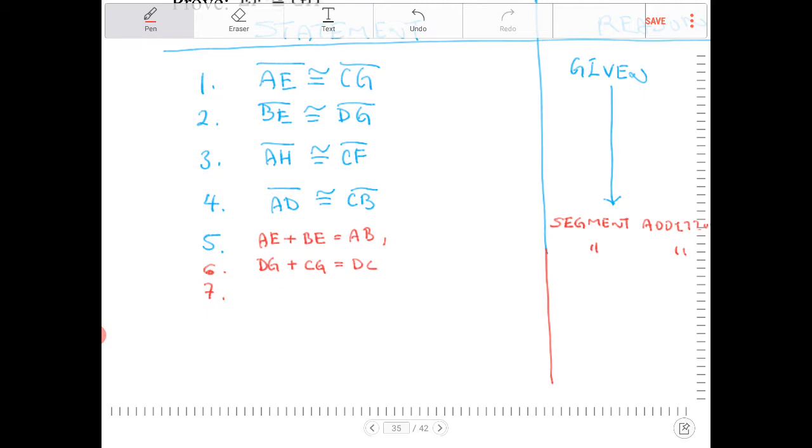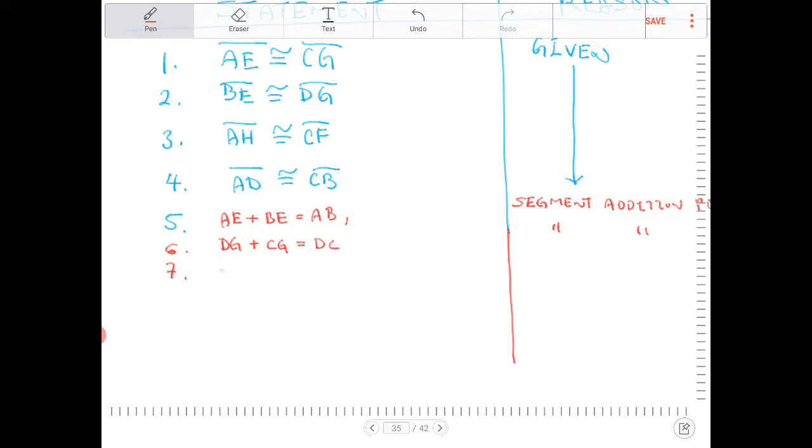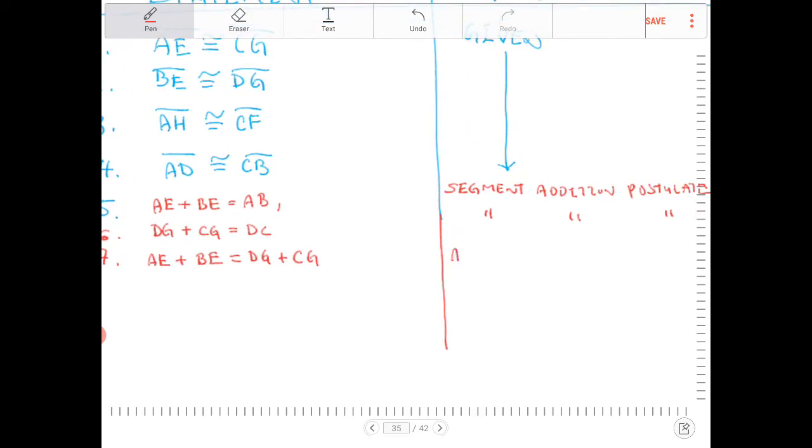So what I'm going to do next is, I'm going to take lines 1 and 2, and I'm going to add them together. And what I'll end up with is AE plus BE will equal to DG plus CG. And the reason for this is addition lines 1 plus lines 2.